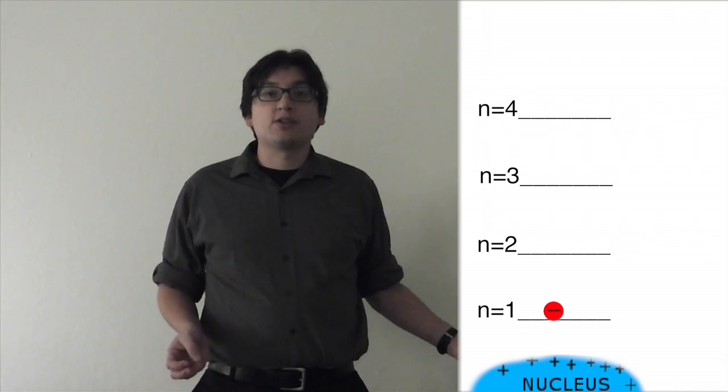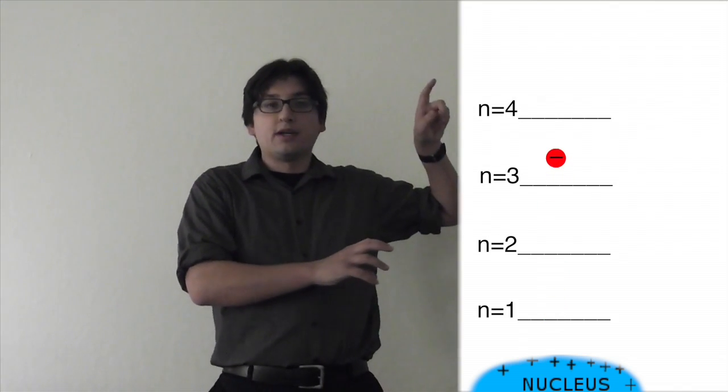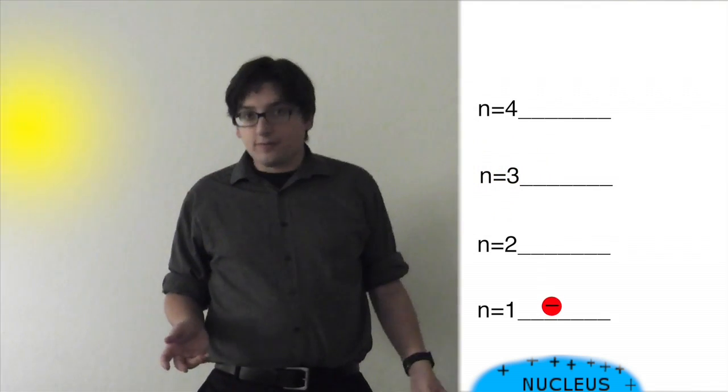That's normally what an electron does. You can actually add energy to it, and it'll go up to a higher level. And when it goes back down, it'll release energy in the form of a photon.